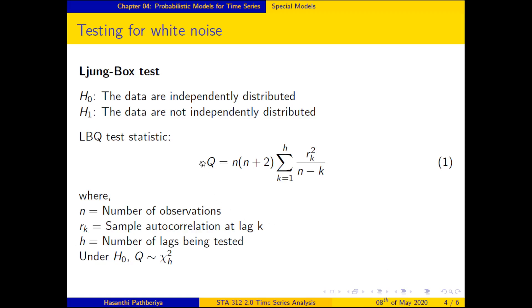In the Ljung-Box test, N is the number of observations (length of the time series), Rk is the sample autocorrelation coefficient at lag k, and H is the number of lags being tested. You need to decide the value of H — for example, H = 10 means you are considering the first 10 autocorrelation coefficients. If H is not given, it is typically set to 10, 12, or 24 depending on the software.